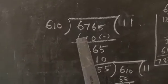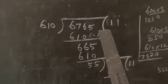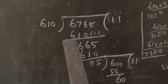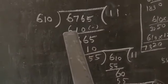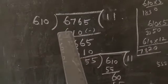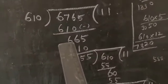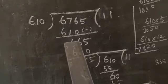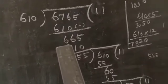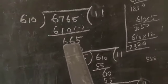So first, we take the first three digits in the dividend, 676. So one 610s are 610. Then we subtract the two numbers, 676 minus 610, we get 66. Then 5 comes down, then we get 665.